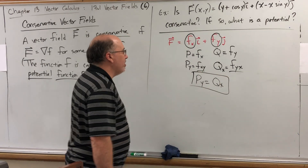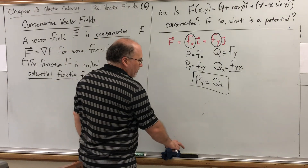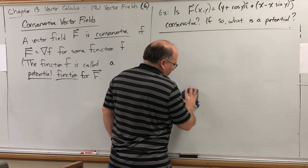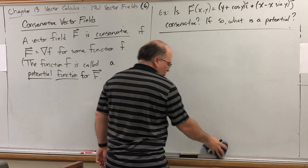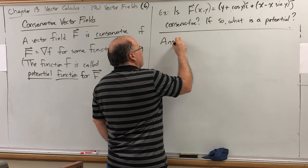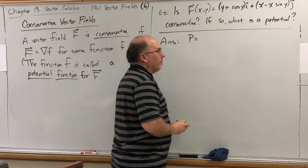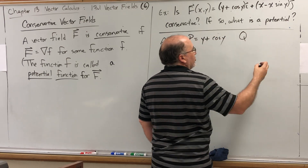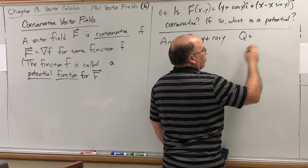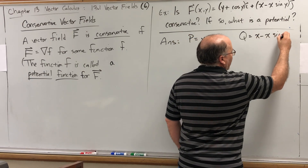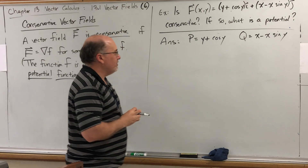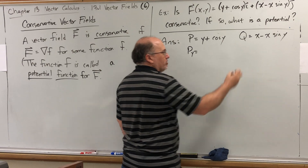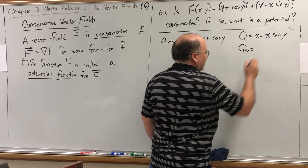To answer the question — is a two-dimensional vector field conservative? — you check if the partial derivative of the first component function with respect to Y is equal to the partial derivative of the second component function with respect to X. So now we have a way of answering the question: are you conservative? For example, let's consider the vector function capital F, where the component function for I is Y plus cosine of Y, and the component function for J is X minus X sine of Y. Is this a conservative vector field, and if so, what is one of its potentials?